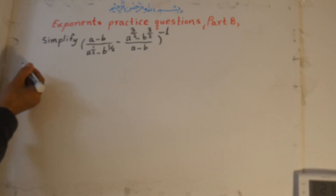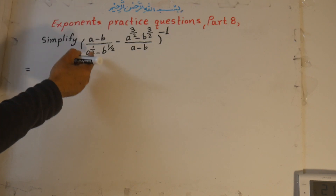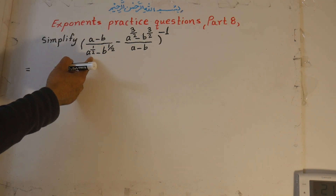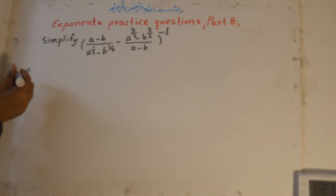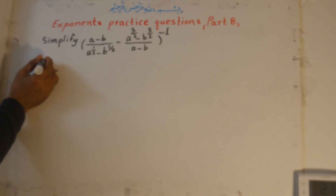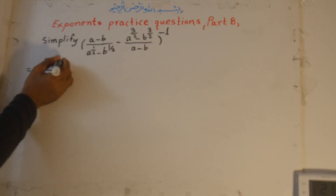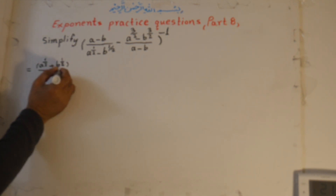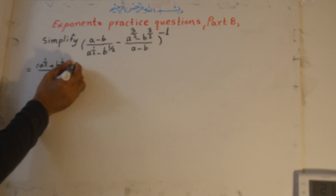For this kind of question, what we do is simplify the first part by factoring. The denominator is a to the power of 1/2. In order to cancel something from the numerator, we should factor this into two factors: a to the power of 1/2 plus b to the power of 1/2.